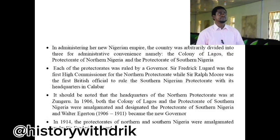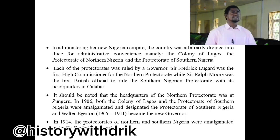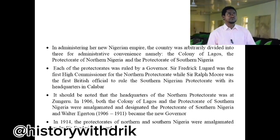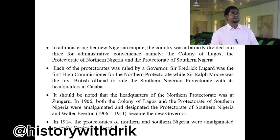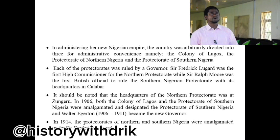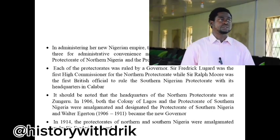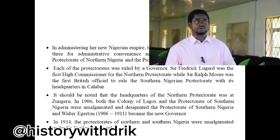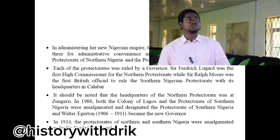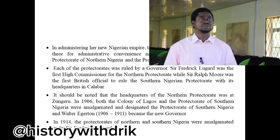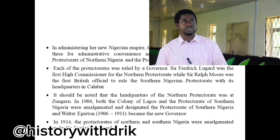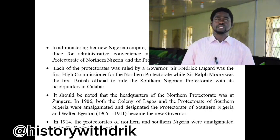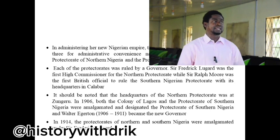In administering her Nigerian empire, the country was arbitrarily divided into three for administrative convenience: namely the colony of Lagos, the protectorate of Northern Nigeria, and the protectorate of Southern Nigeria. Each of the protectorates was ruled by a governor. Sir Frederick Lugard was the first High Commissioner for the Northern Protectorate, while Sir Ralph Moore was the first British official to rule the Southern Nigerian Protectorate with its headquarters in Calabar.